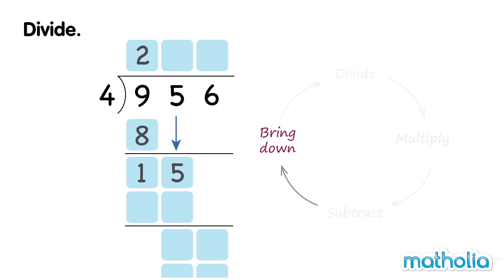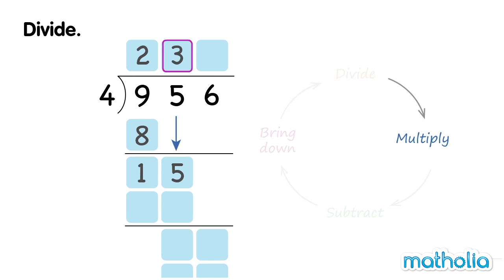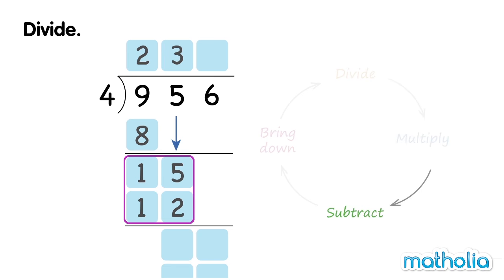Bring down the tens. Now we have 15 tens. Divide. 15 tens divide 4 gives a quotient of 3. Write the 3 in the tens column at the top. Multiply. 3 tens times 4 equals 12 tens. Subtract. 15 tens minus 12 tens equals 3 tens.